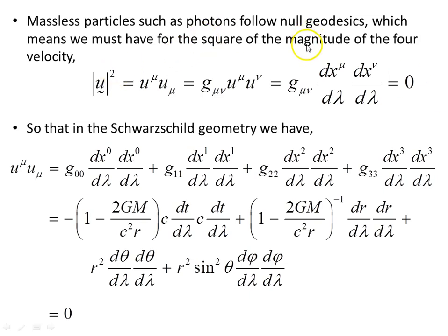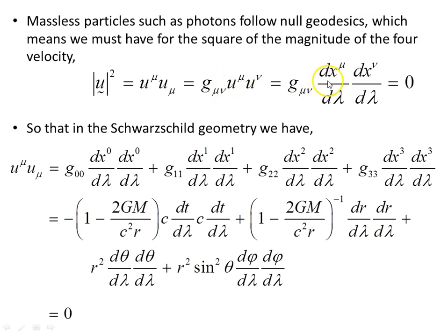Massless particles such as photons follow null geodesics, which means we must have the square of the magnitude of the 4-velocity equal to 0. This is achieved by contracting on the 4-velocity vector components — the metric lowers the index to give this object. The tangent vector dx^μ/dλ represents the 4-velocity components, and the metric reduces the index so this object can be contracted to give a scalar equal to 0. In the Schwarzschild geometry, we can write out the 4-velocity squared using the metric components g₀₀, g₁₁, g₂₂, and g₃₃ = r² sin²θ.